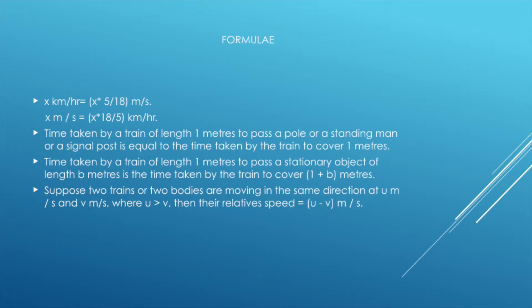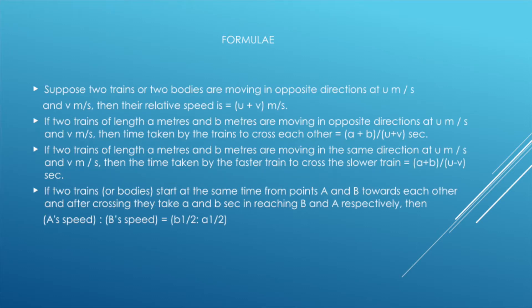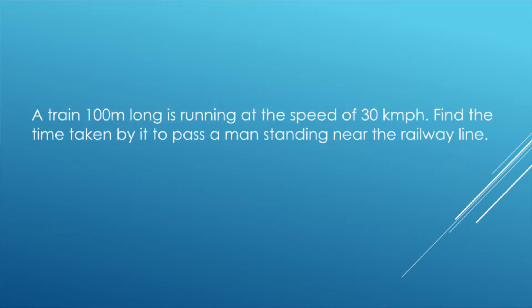If you have the formula in the RS Aggarwal book, we will try to solve this. First problem: a train 100 meters long is running at a speed of 30 km per hour. Find the time taken by it to pass a man standing near the railway line.